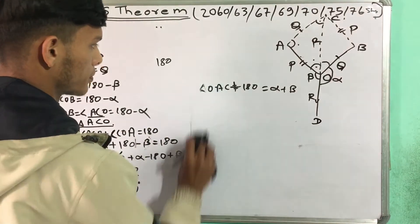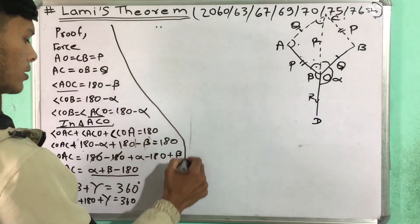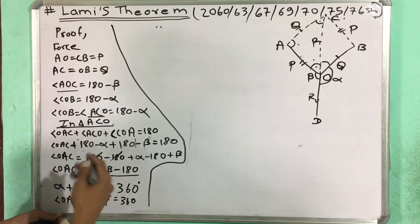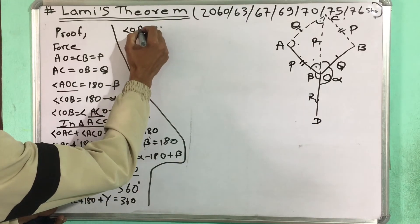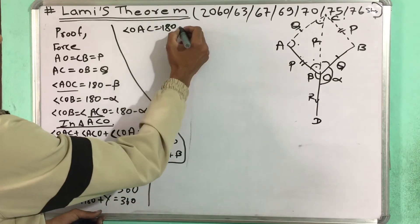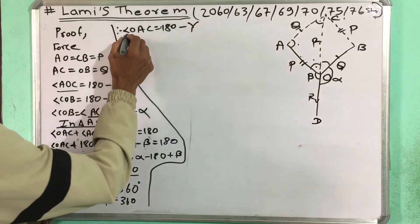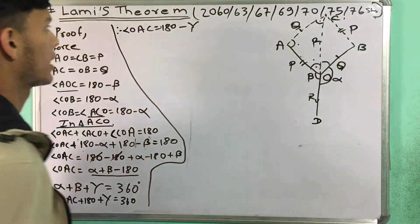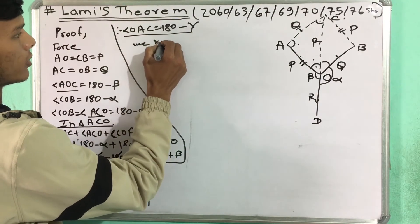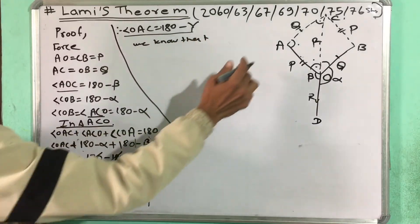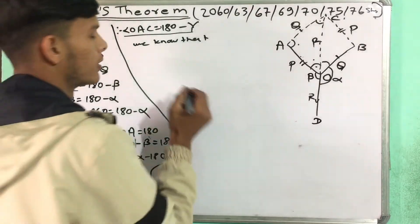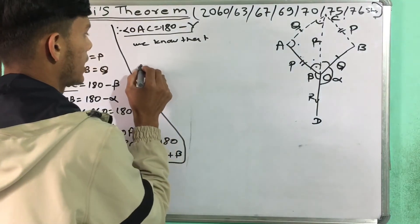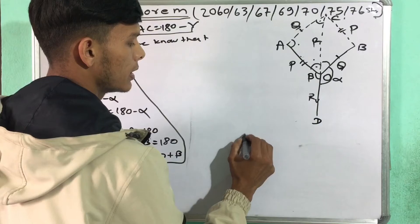Now I am going to add that. Angle AOC is equal to 1. In triangle ACO, using the sine rule, the sine of angle ACO over line AO equals the sine of angle OAC over line.